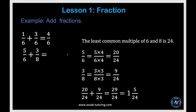Now we'll learn how to add fractions. To add fractions, you must first make sure the denominators are the same — that is, find a common denominator. If the denominators are already the same, just add the numerators: 3 over 6 plus 1 over 6 gives 4 over 6. But for 5 over 6 plus 3 over 8, the denominators are different, so you need to find the common denominator — the least common multiple of 6 and 8, which is 24.